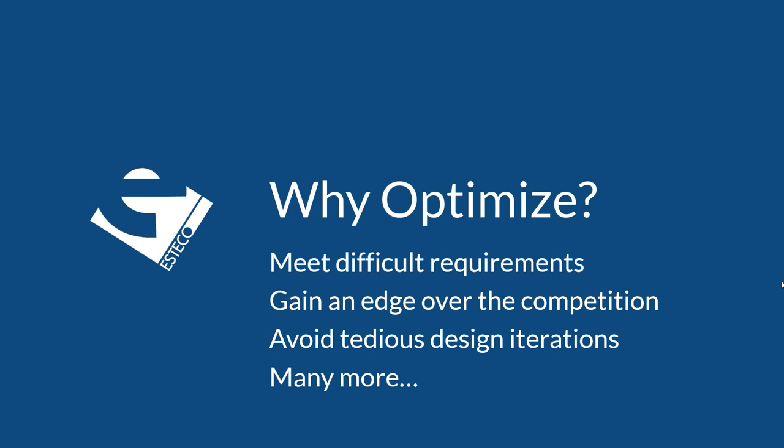So why optimize? Often it's to meet very stringent requirements, which could be government regulations or internal requirements. It's very difficult to manually optimize — it's time-consuming going through iteration after iteration. It's better to use a software robot, like it's done in mass production. We hook up a software robot that can go through many design iterations for us while we're away, running 24/7. An optimized design also gives you an edge over the competition if your competitor doesn't have the same performance. It also avoids the tedious nature of manually doing many iterations.